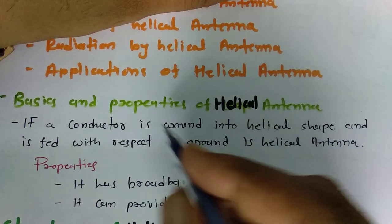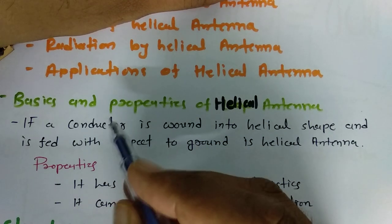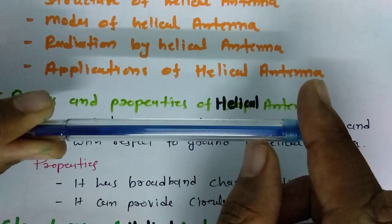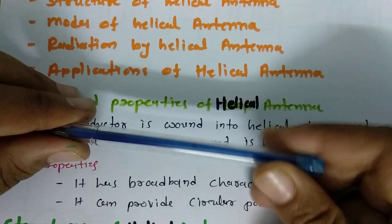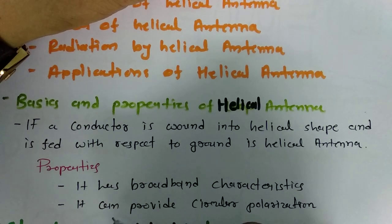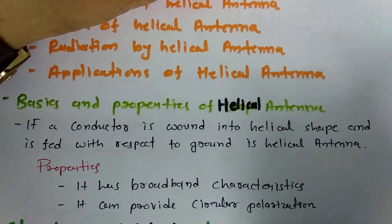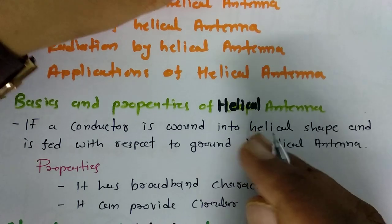First of all, what is a Helical Antenna? A Helical Antenna is just a conductor wound in a helical shape, and that is fed with respect to ground. For example, if I have a cylinder and over which I wound a wire, it will make a helical shape. It has basic properties like broadband characteristics and circular polarization. These two are very important properties of Helical Antenna.